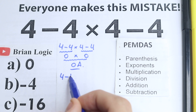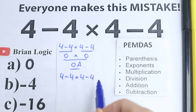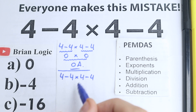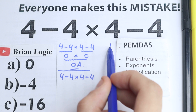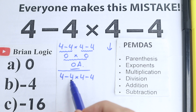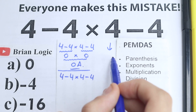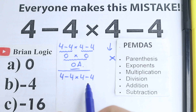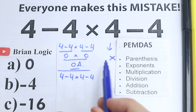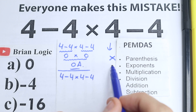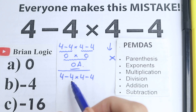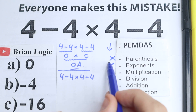So we have 4 minus 4 times 4 minus 4. The first step according to PEMDAS is parentheses. We don't have any parentheses, so we skip this step. Next step: exponents — any squares or cubes? No, we don't have any exponents, so we skip that step as well. We don't have these first two steps, which is great for us.